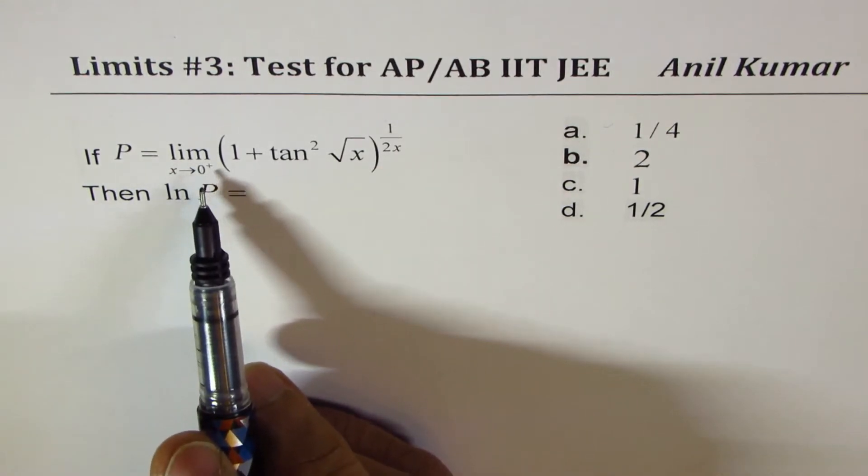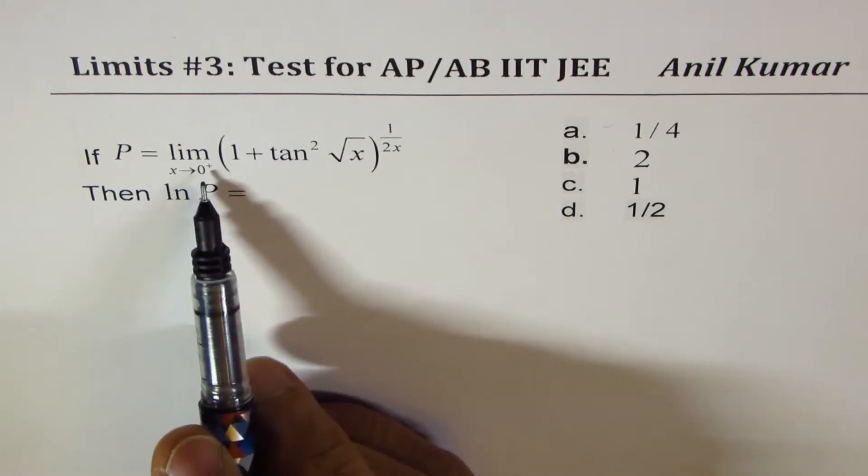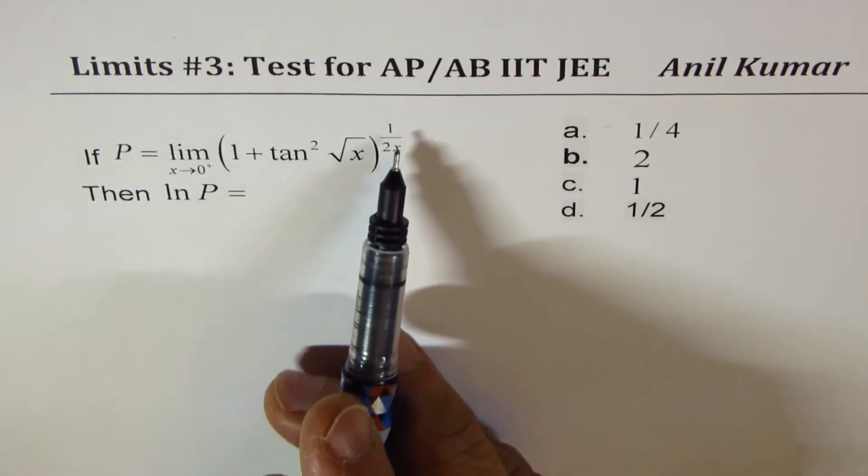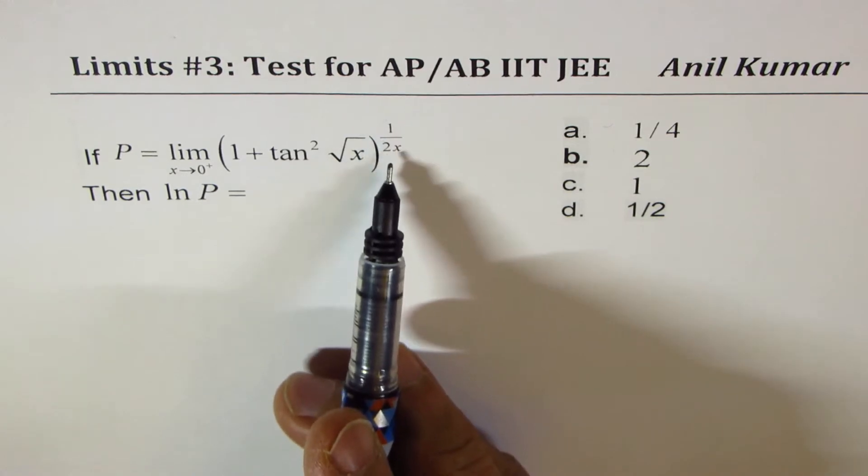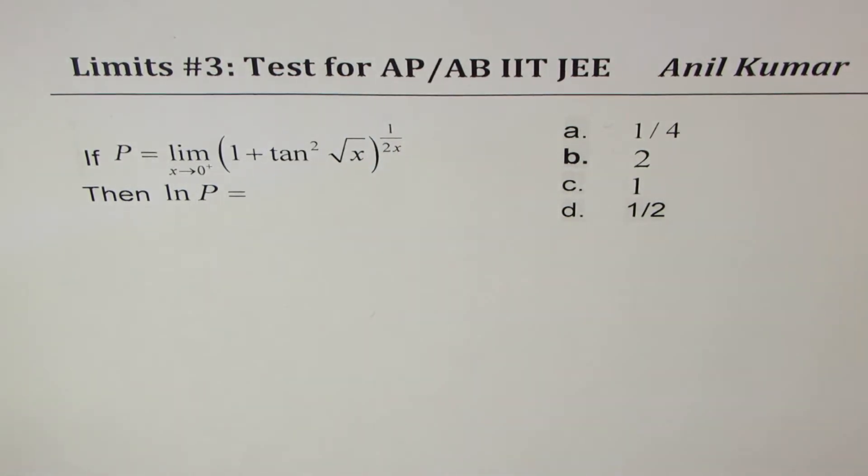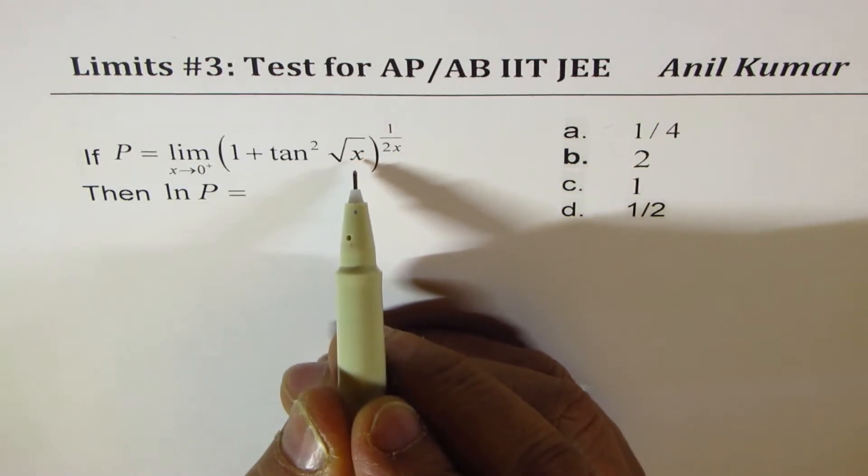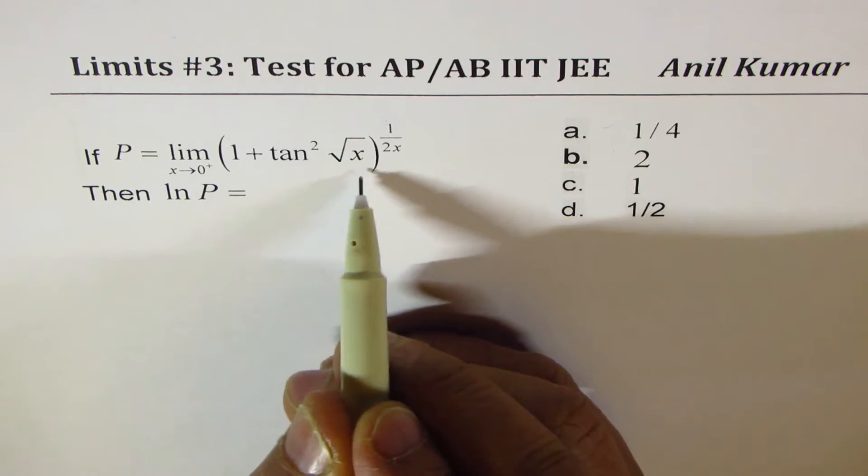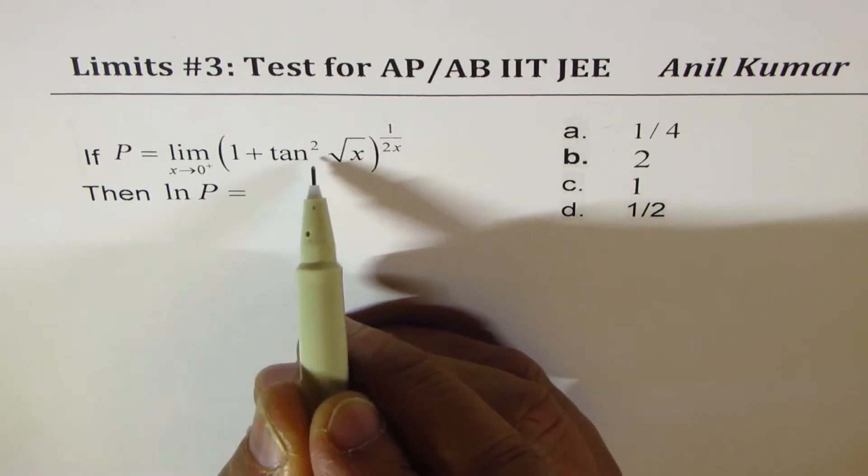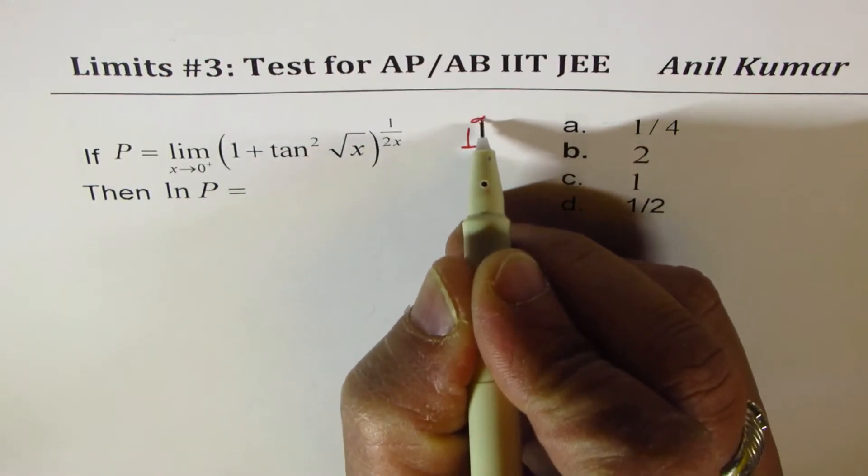Now if I approach x from right side of 0, then you can see that exponent 1/2x will approach infinity. And tan²√x, this portion will be 0 when approaching 0. So we have the form 1^∞.